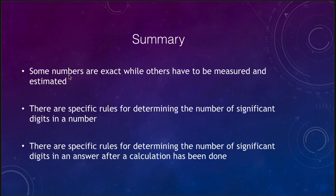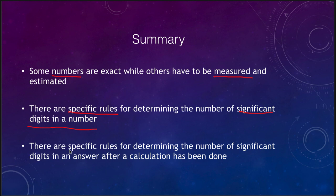To summarize: we talked about exact numbers and measured numbers — there is a big difference. Exact numbers have as many significant figures as you need; measured numbers have a limited number. We covered the specific rules for determining significant figures in a number, and the specific rules for determining significant figures in a calculated answer, which differ for multiplication and division versus addition and subtraction. That concludes our lecture on significant figures. We'll be back next time for another math help video — until then, have a great day, and I will see you in class.